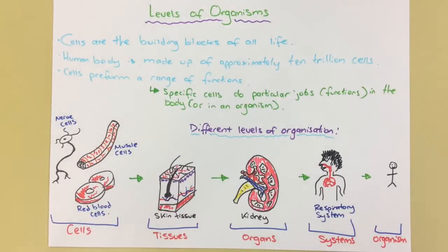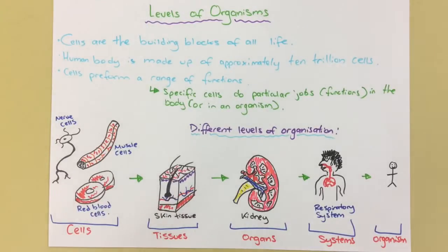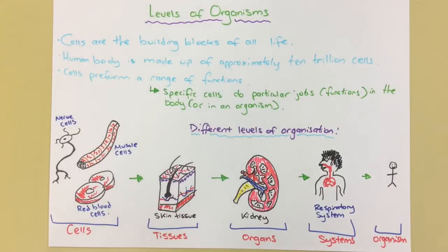Let me go through that in reverse order. Cells such as nerve cells, muscle cells, and red blood cells all do something special in the body. They make up, or are part of, tissue. Nerve cells are part of the nervous system, muscle cells are part of the musculoskeletal system, and red blood cells are part of the circulatory system.